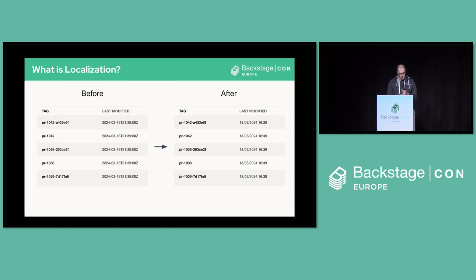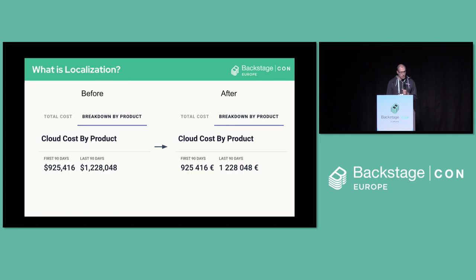Another example is currency. If you are working in financial services, that could be something pretty critical. On the left side, you see it's showing just dollars with commas to separate the thousands. And then on the right side, you could show something more local — for example, here in Paris, showing euros.